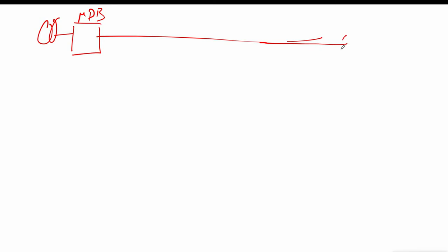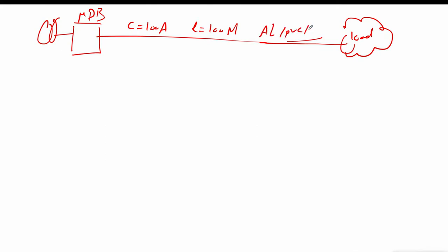We draw our example again: a power source connected to MDP and a load. We need a cable to handle 100 ampere current over a length of 100 meters. The cable is aluminum conductor with PVC inner and PVC outer insulation, installed at a depth of 0.8 meter, ground temperature 30°C, with three cables grouped in the same trench.